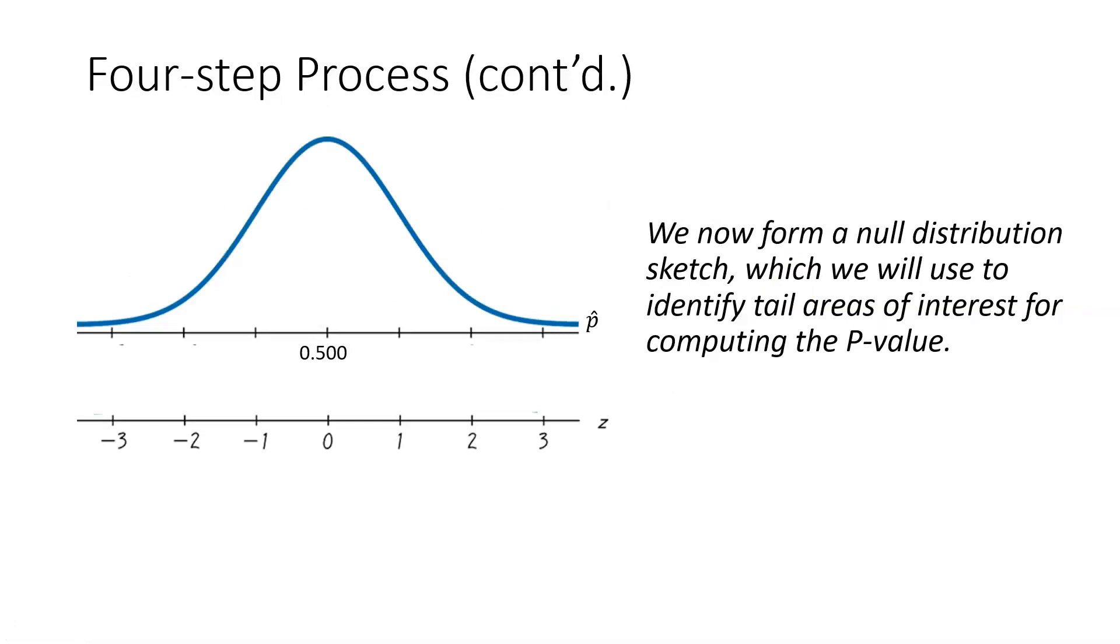The next step as part of the calculate process is we're going to form what is called a null distribution sketch, which we will then use to identify the tail areas of interest for computing the P-value. I start by drawing a normal distribution sketch with the null value of 0.5 in the center of my P-hat axis. Notice I've scaled it 3 above and 3 below for tick marks, and down below I've also included a Z axis.